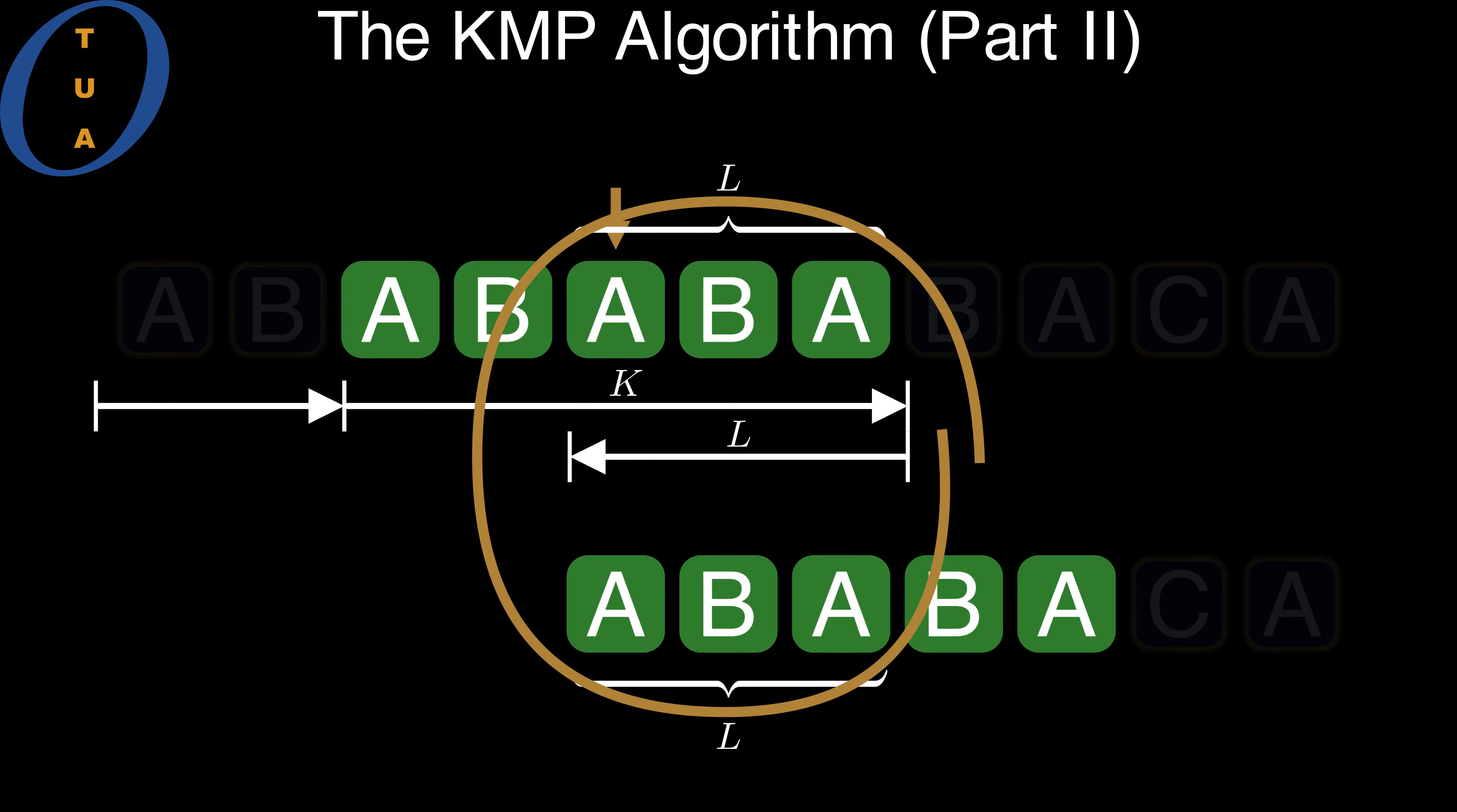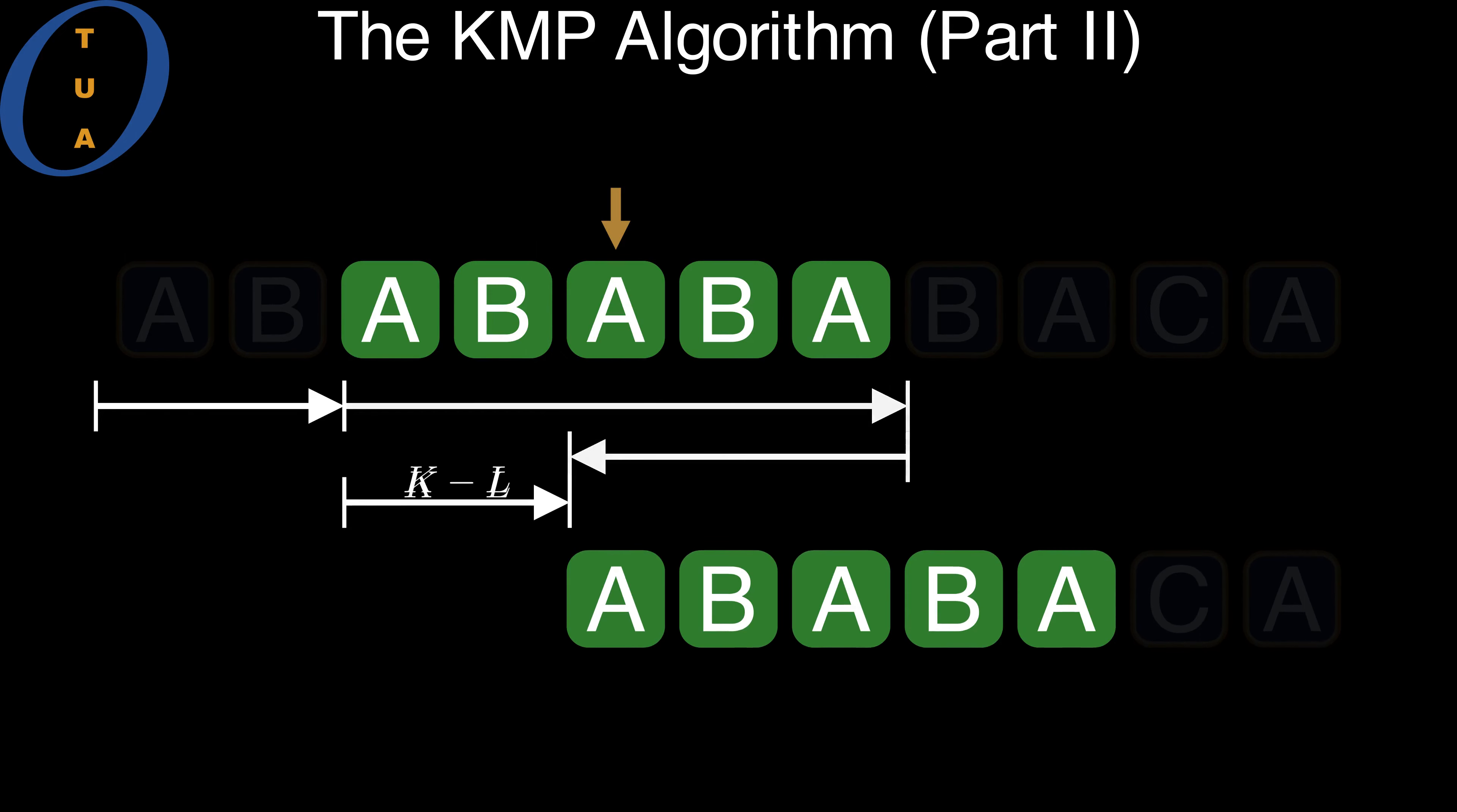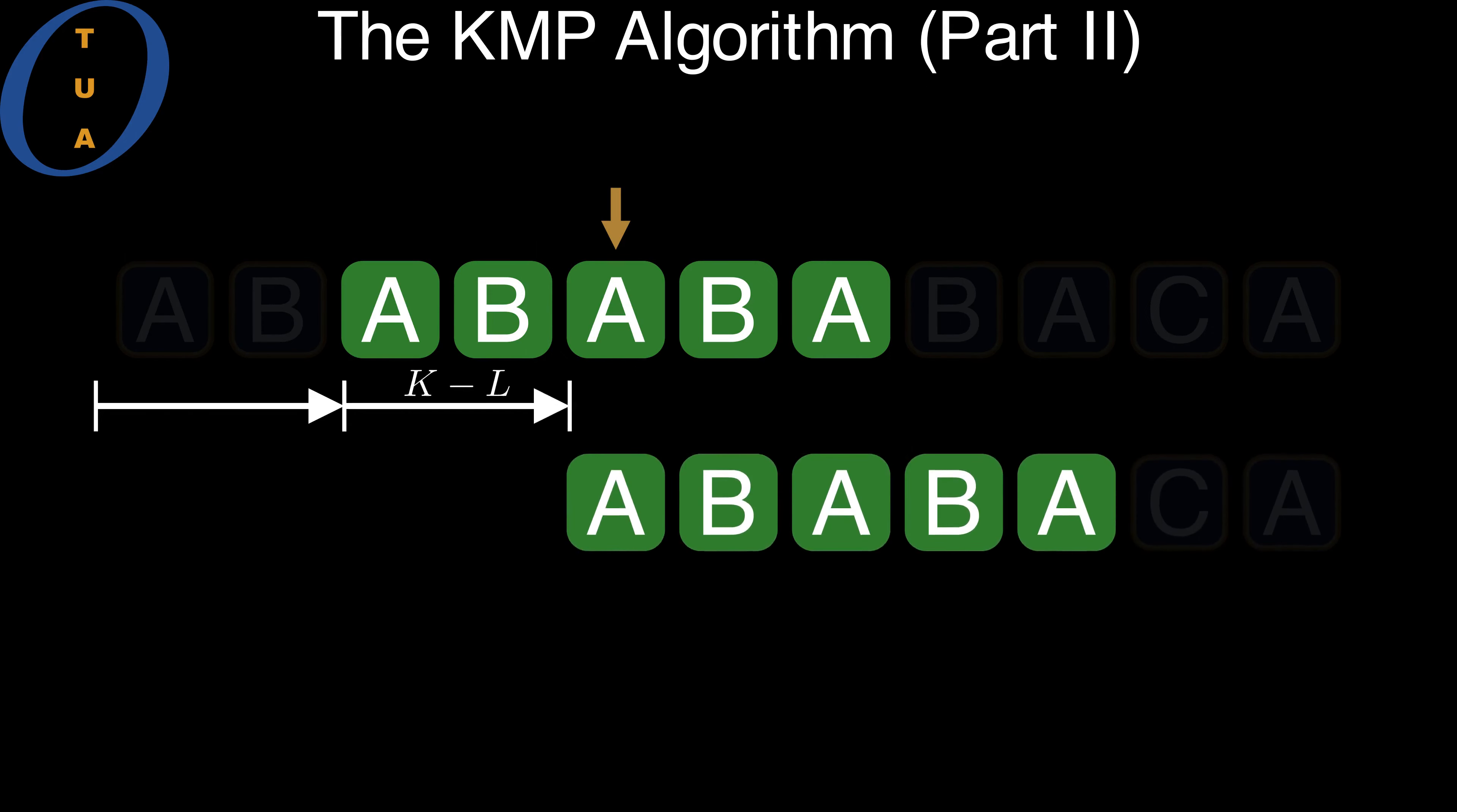which means that the pattern is now aligned at the largest proper border. In summary, we update the offset by increasing it by a value of K minus L.